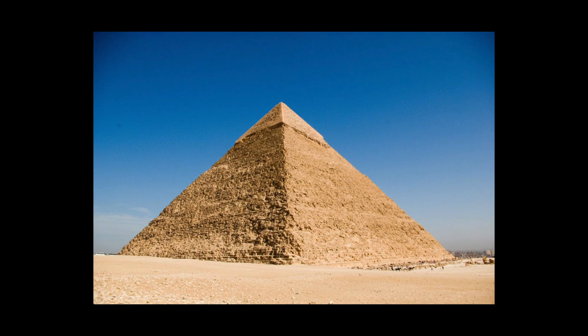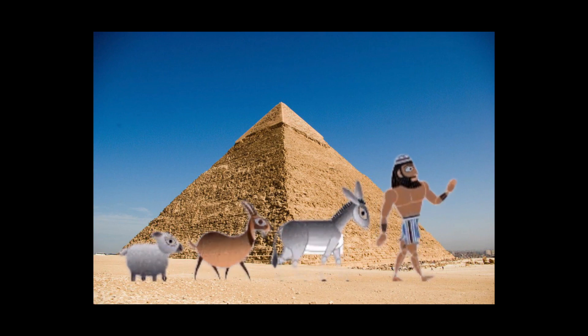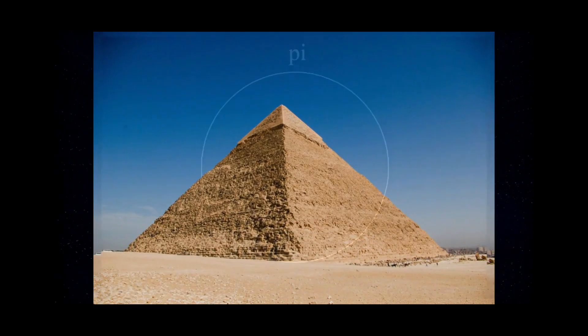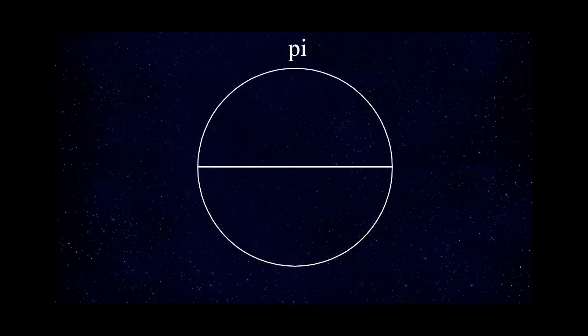Before Jones came up with this symbol back in 1706, we know the Egyptians and Babylonians were using the numbers of pi around 1900 BC, and possibly as far back as the building of the pyramids, as some of the pyramids are close to pi, which means they were using it. But some say we don't know if they meant to do that or not - it might just be coincidence.